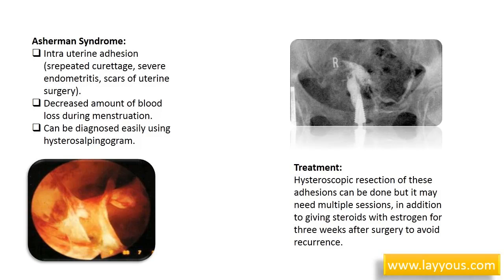Asherman syndrome: intrauterine adhesions form either after repeated curettage, severe endometritis, or due to scars from previous uterine surgery. Women with this syndrome usually complain of decreased menstrual blood loss. It can be diagnosed using hysterosalpingogram, and hysteroscopic resection of these adhesions can be done, though it may need multiple sessions, in addition to giving steroids with estrogen for three weeks after surgery to avoid recurrence.